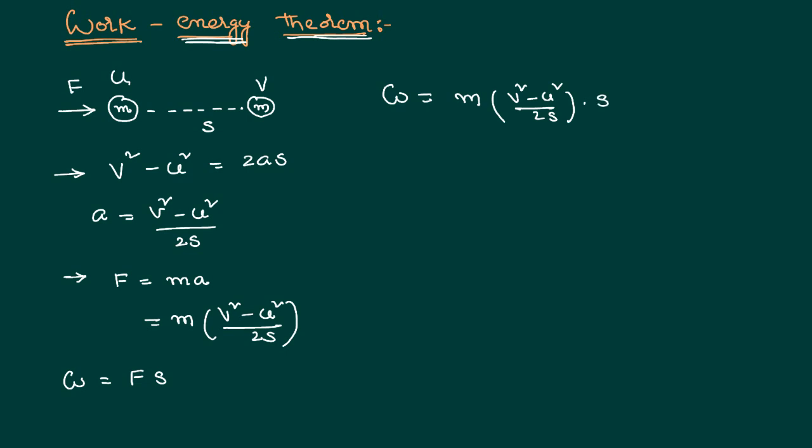So we can cancel the values of s. We can write the equation for work done as m(v² - u²)/2.